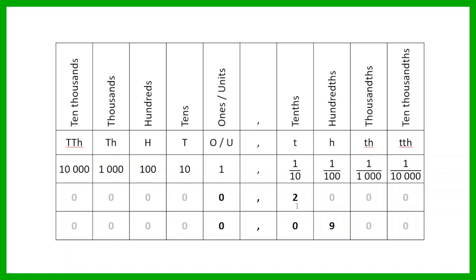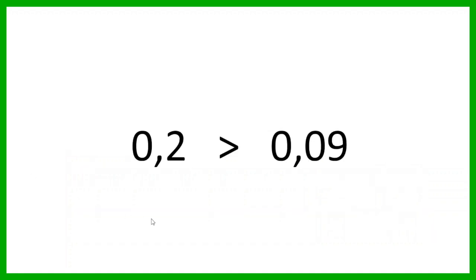Okay, so because two tenths has a greater value than nine hundredths, we can then say that 0.2 is greater than 0.09. Even though the number two on its own is less than the number nine on its own, because of their positions in their respective numbers, 0.2 is greater than 0.09.